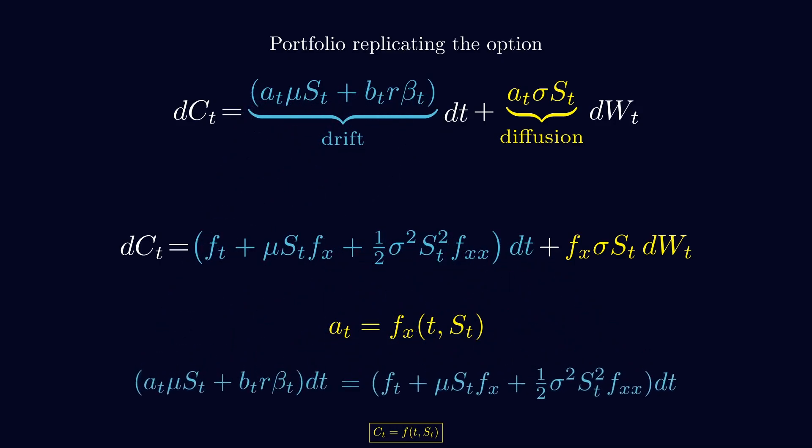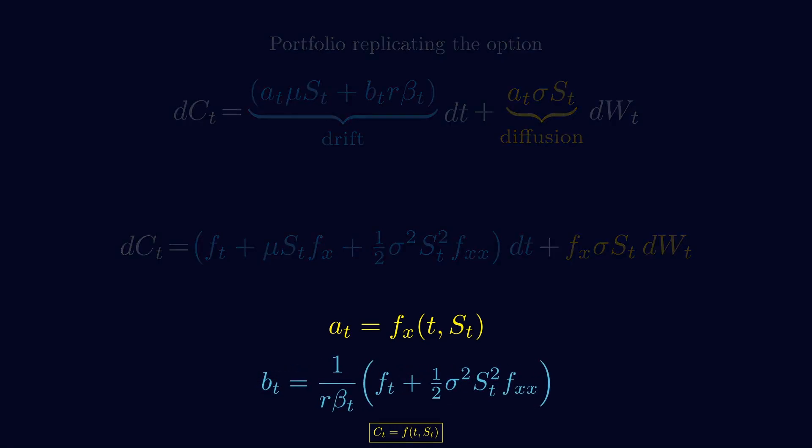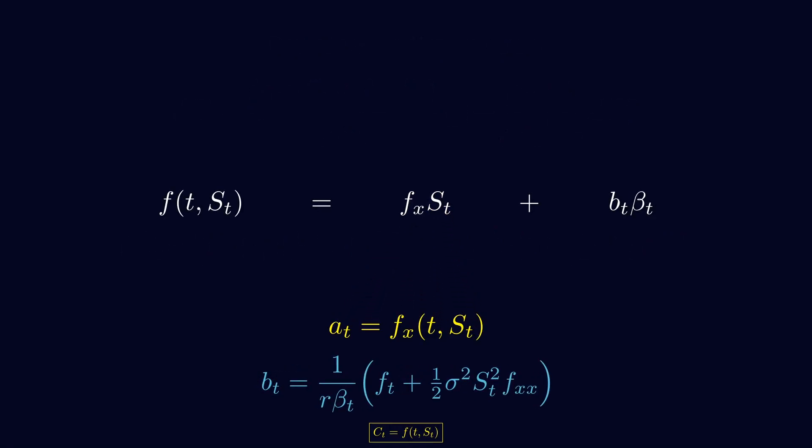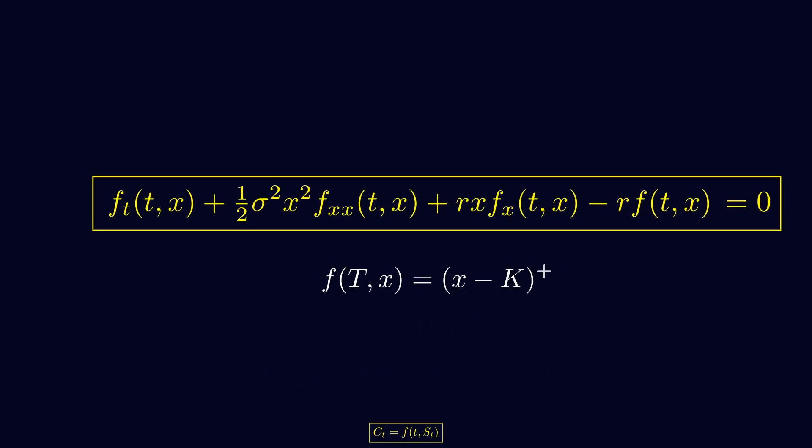Then, we isolate B as well. That's the cash or bond part that completes the hedge. Once we plug A and B back into the replicating portfolio, we get the pricing equation that the option value must satisfy. This is the Black-Scholes equation, a stochastic differential equation with a terminal condition that says, at the end, the option's value equals the payoff, which for a call is stock price minus strike price, if positive. Otherwise, zero.